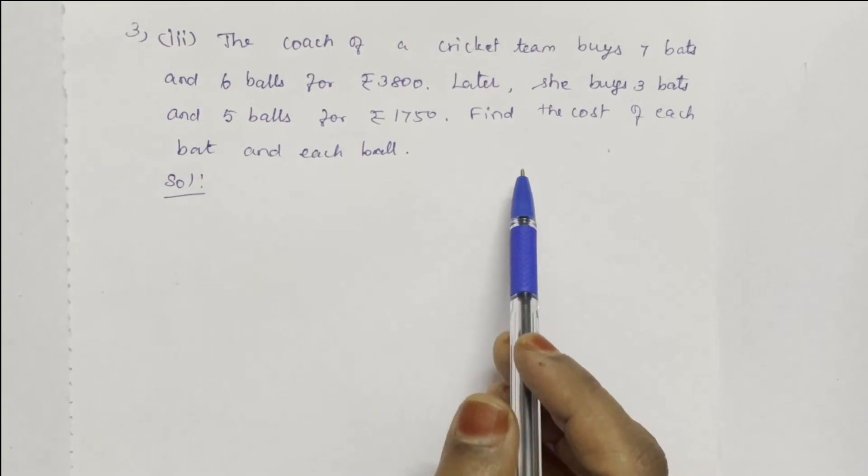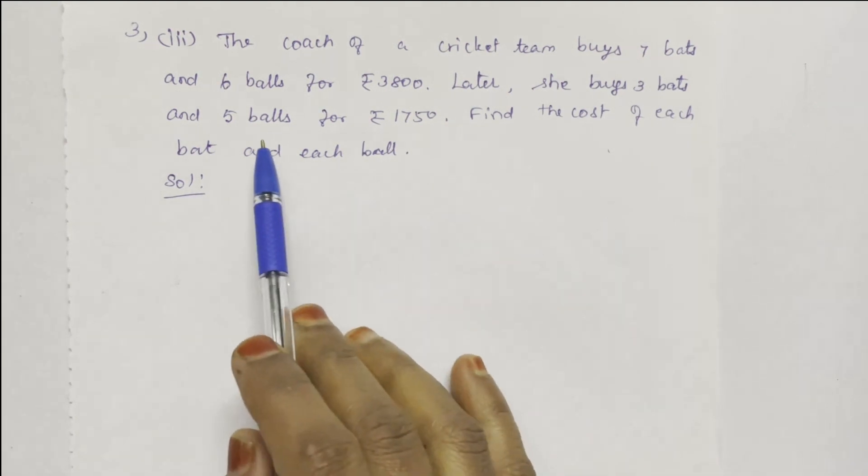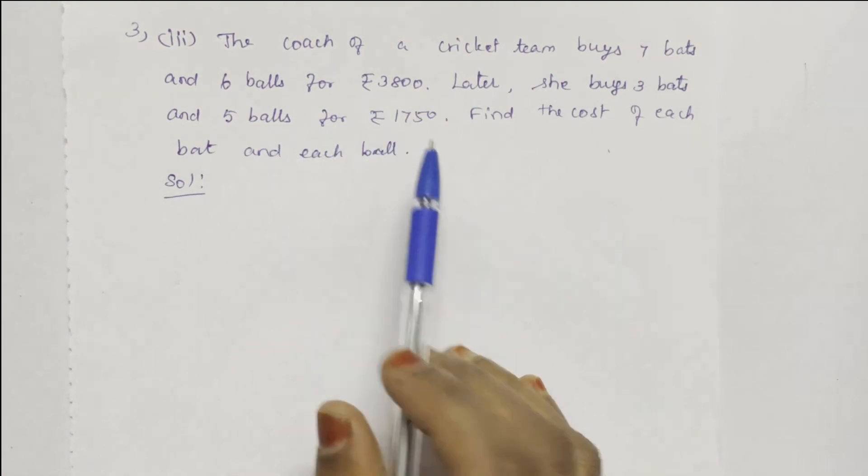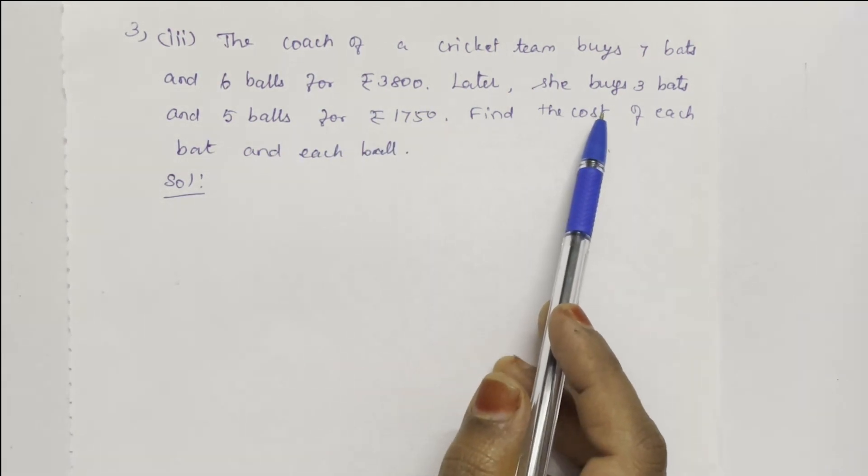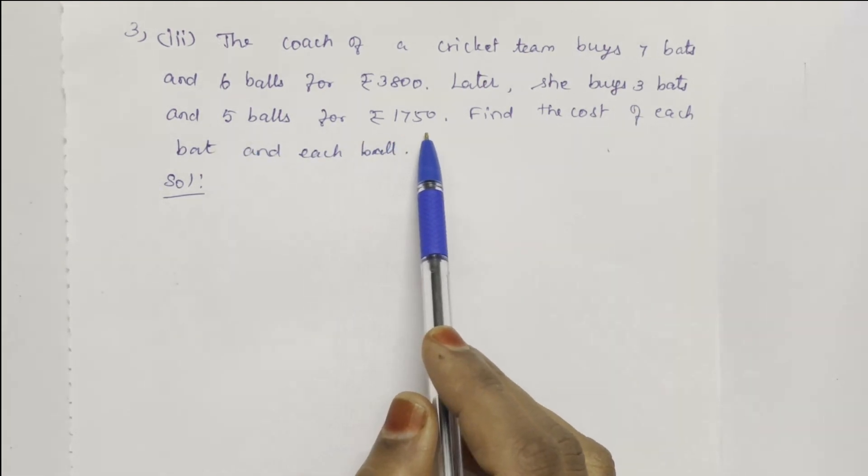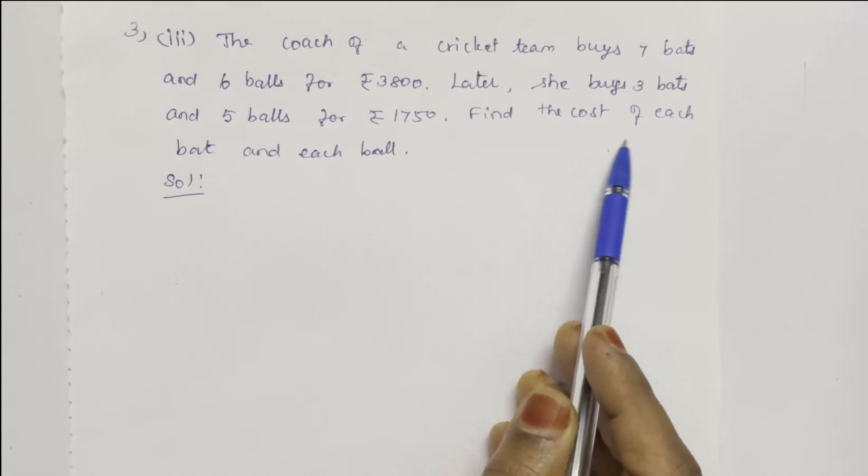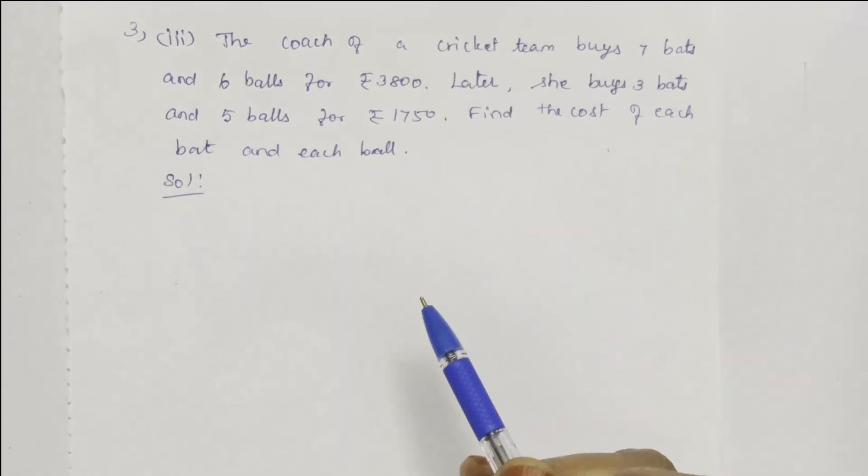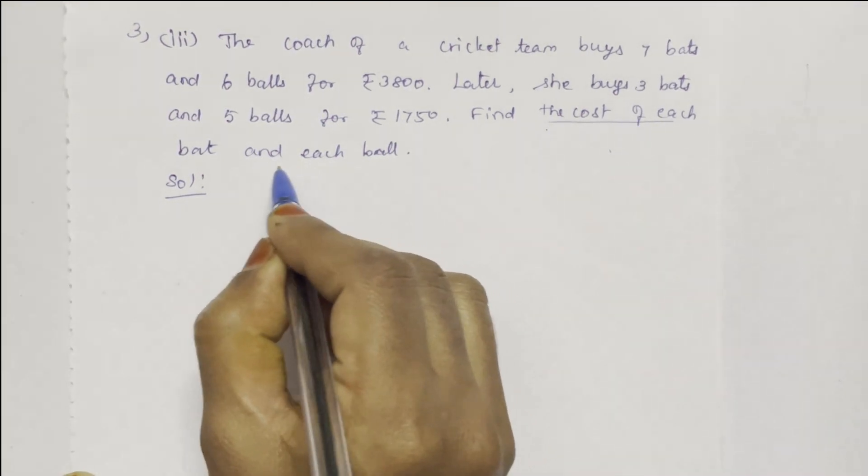The coach of a cricket team buys 7 bats and 6 balls for Rs. 3800. Later she buys 3 bats and 5 balls for Rs. 1750. Find the cost of each bat and each ball.